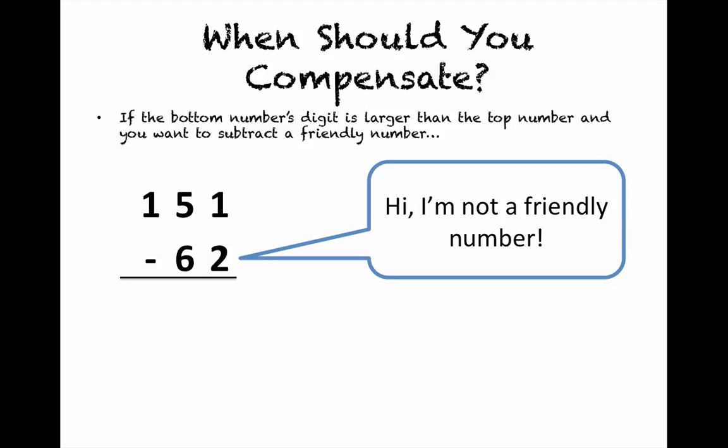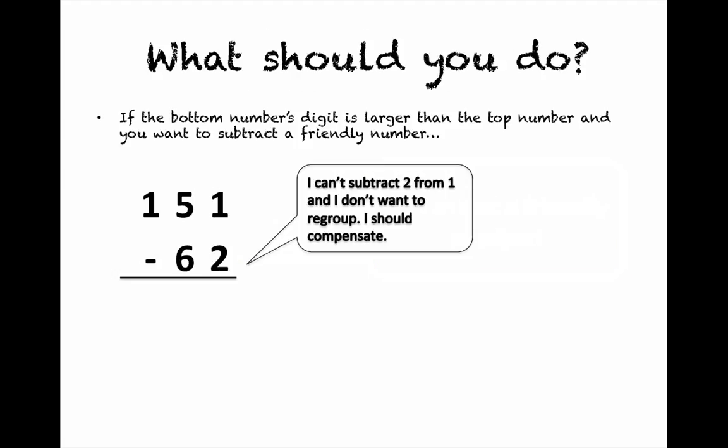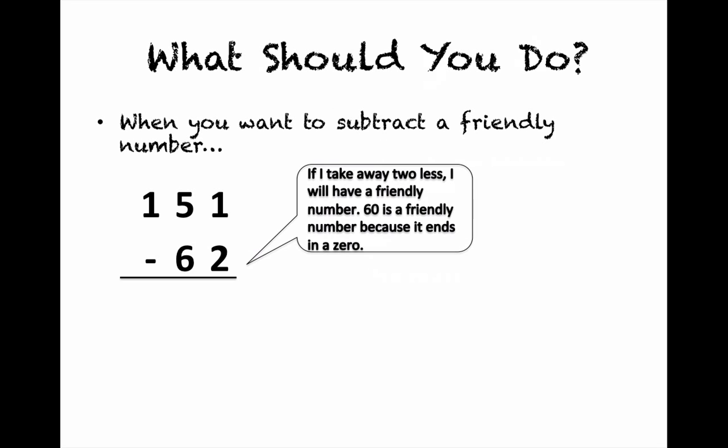62 is not a friendly number. I can't subtract two from one and I don't want to regroup. I should compensate. If I take away two less I will have a friendly number. 60 is a friendly number because it ends in a zero.